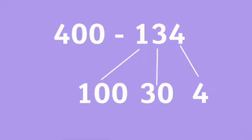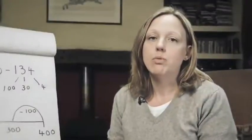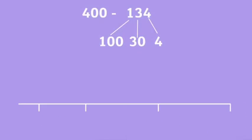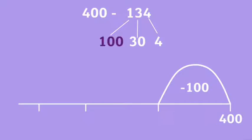Then they can take these smaller bits away from 400 one at a time. They can start from 400 and take away 100 first. That would take them to 300.